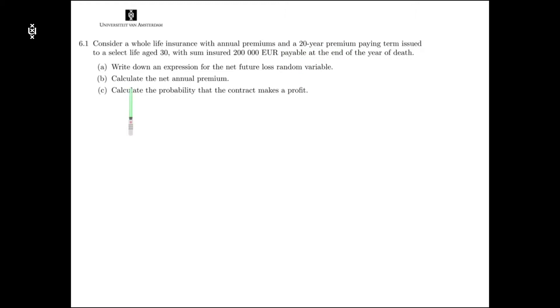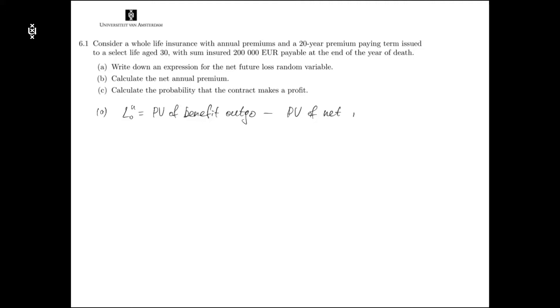In the first part of this question, we need to write down an expression for the net future loss random variable. Recall that the net future loss is a difference between the present value of benefit outgo and the present value of net premium income.